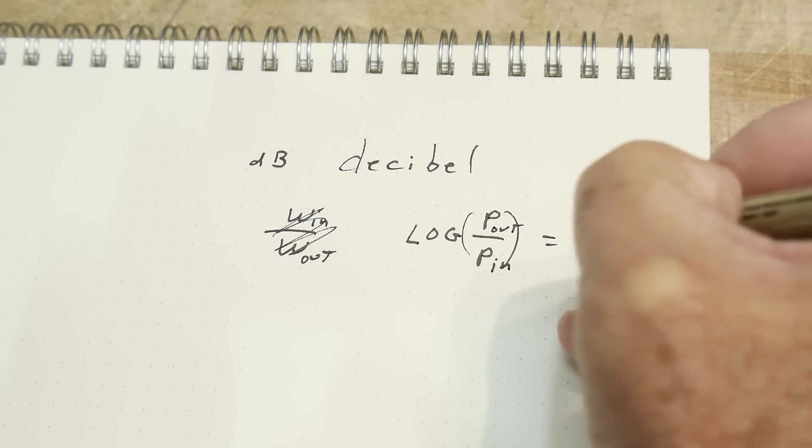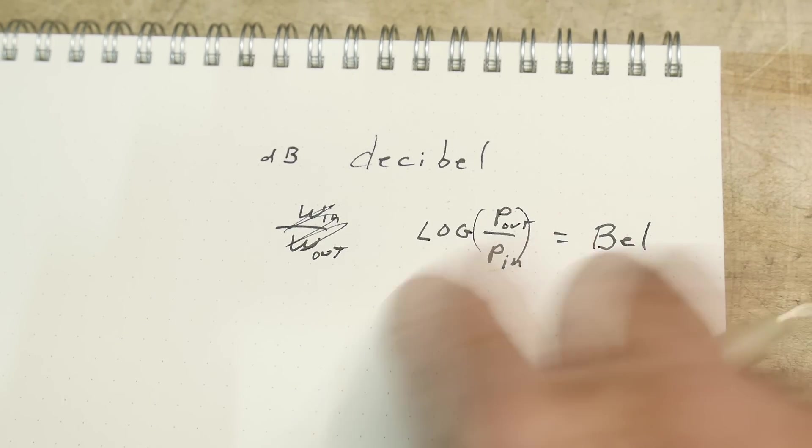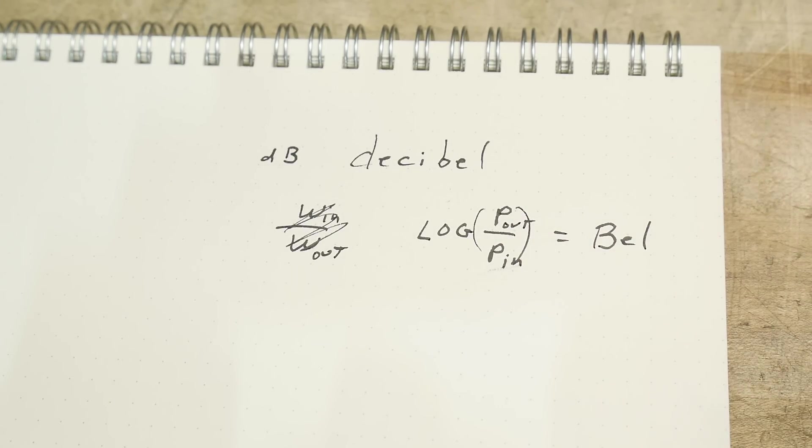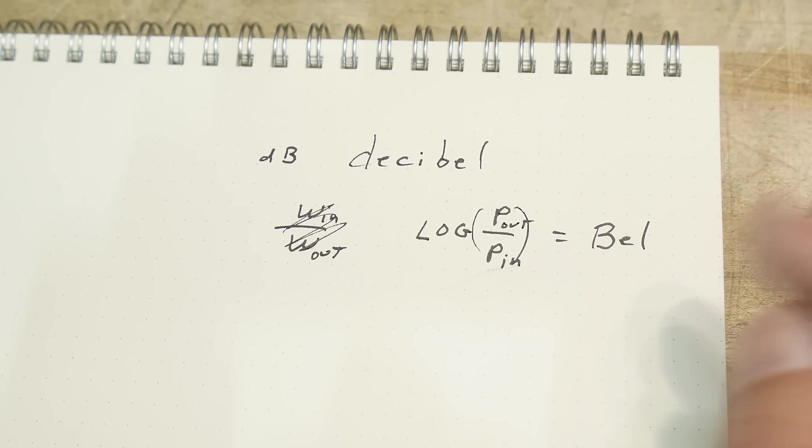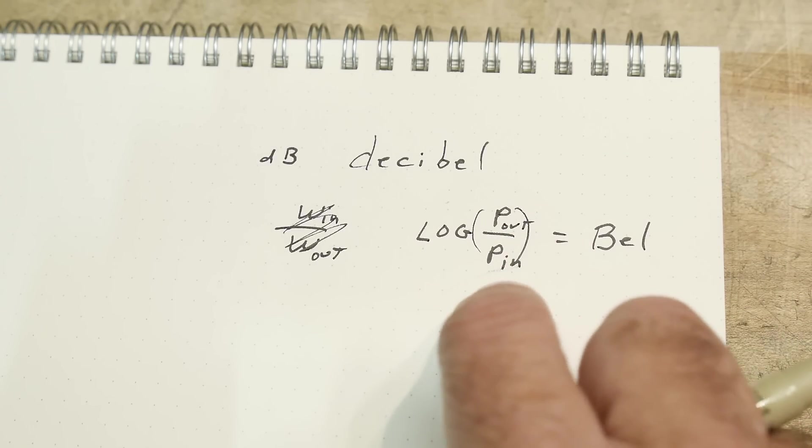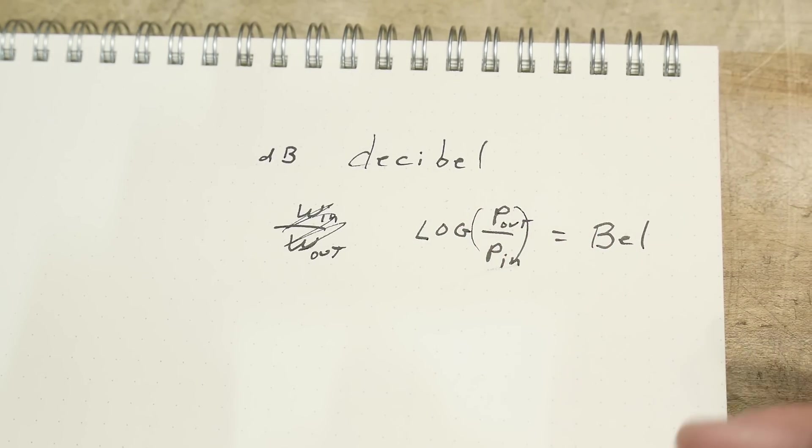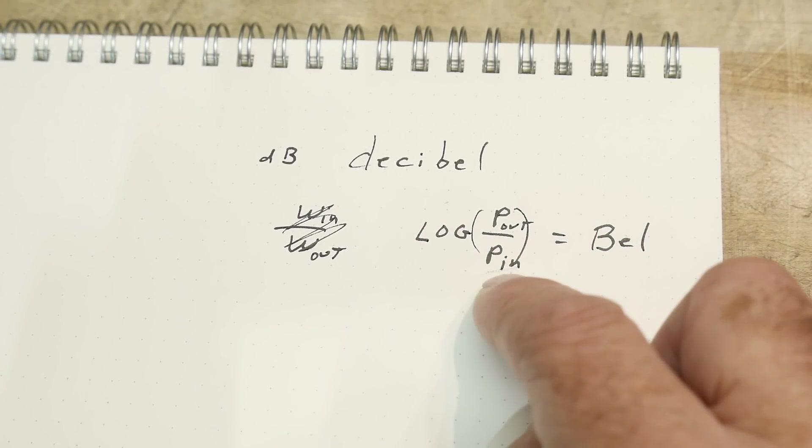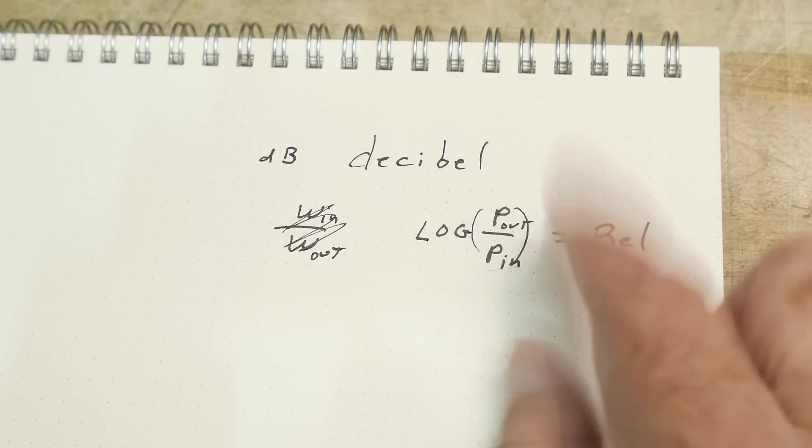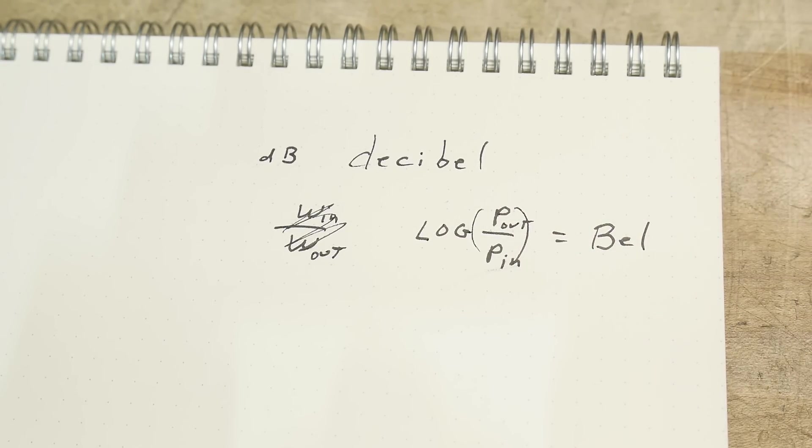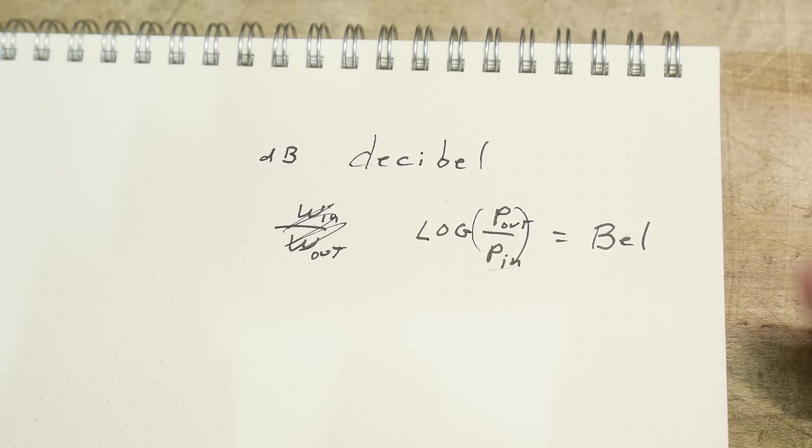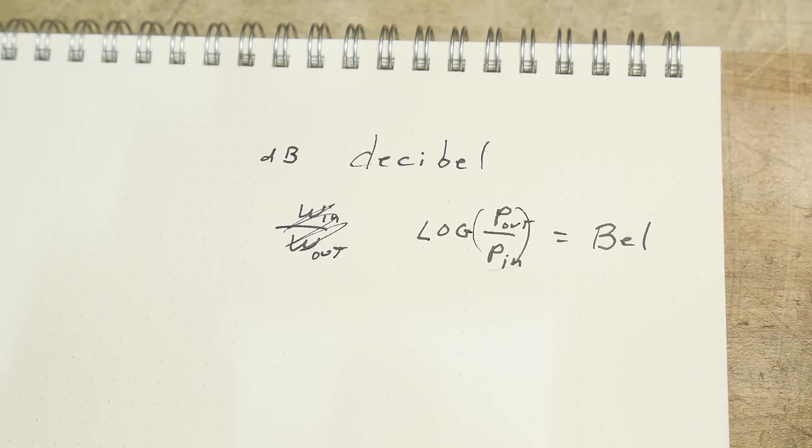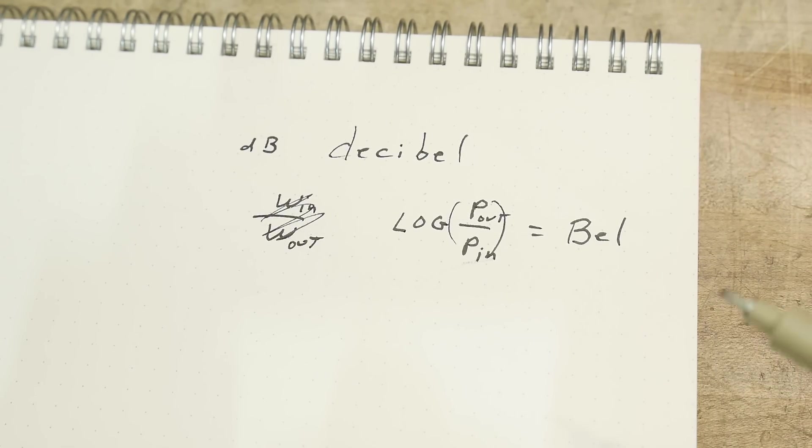This was done around the 1920s and was named after him. It's the power out in watts divided by the power in in watts, and the logarithm of that is a Bell. Then they started using that and went, the numbers aren't quite right, they're too big.